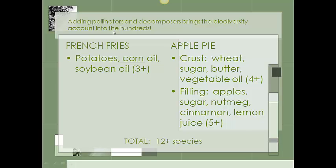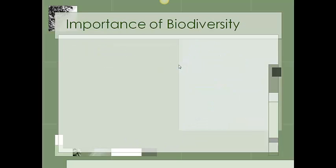And we don't want to forget about all the pollinators that pollinate those plants that our food is made from, and the decomposers that help keep nutrients moving for those plants. When we include them, our biodiversity count for this meal goes into the hundreds. Even little insects and bacteria in the soil are important in our biodiversity count. So losing those is just as important as losing the actual plant or animal that we eat.